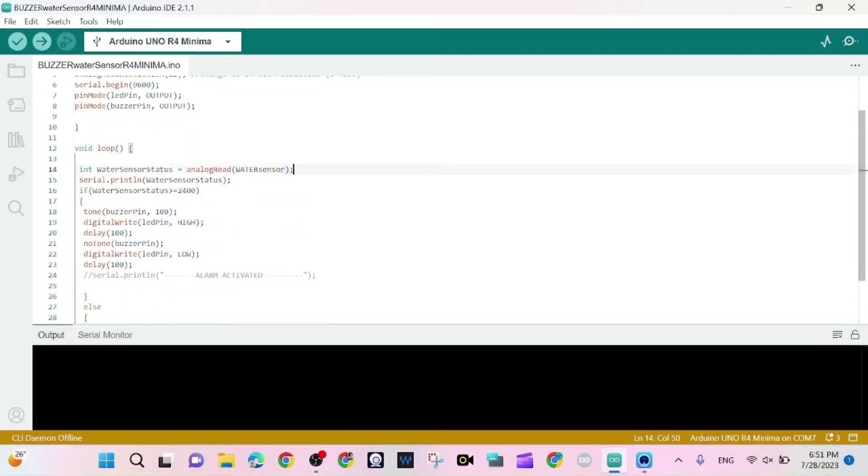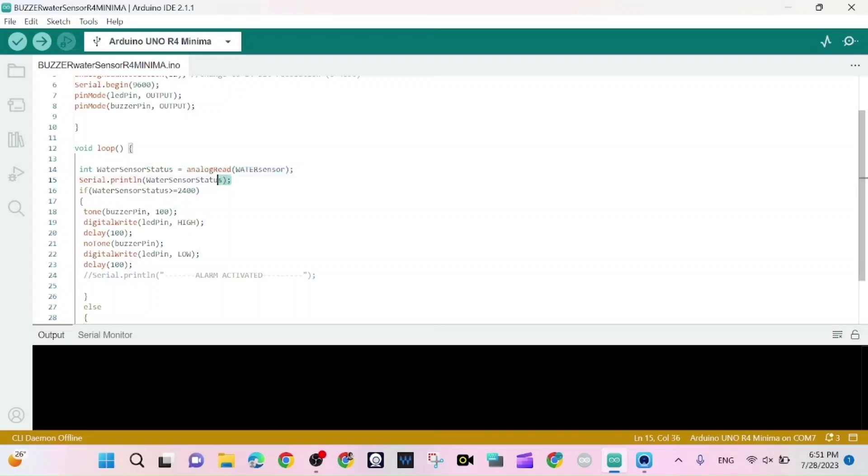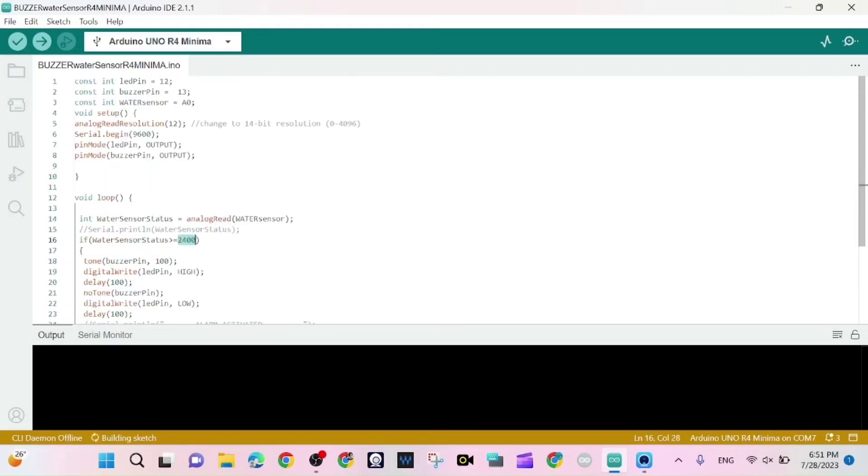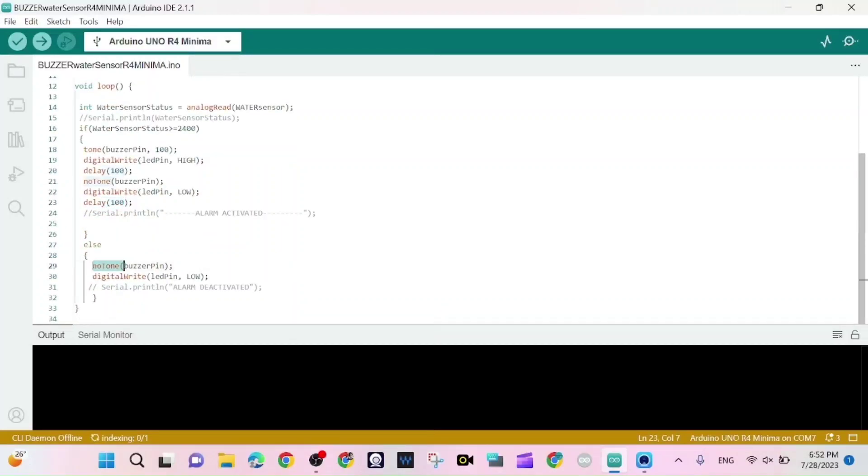Here we are generating the digital number that goes from zero to 4096 because the beat resolution is 12 bit. We print out the value of water sensor status. If the value of the water sensor status is greater than or equal to 1400, then we call the tone function, turn on the LED, wait 100 milliseconds, then call no tone function, turn off the LED, and wait 100 milliseconds. Else, we call no tone function and turn off the LED.